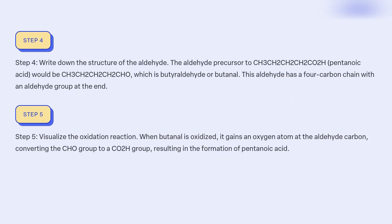Step 5: Visualise the oxidation reaction. When butanal is oxidised, it gains an oxygen atom at the aldehyde carbon, converting the CHO group to a COOH group, resulting in the formation of pentanoic acid.